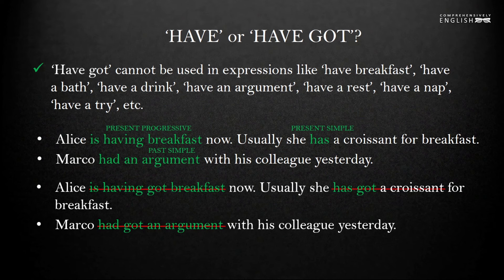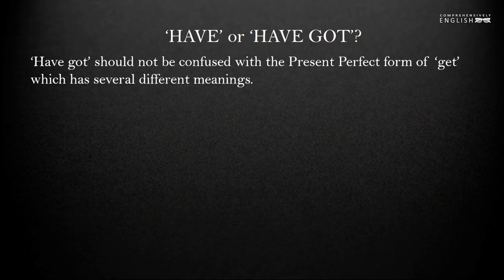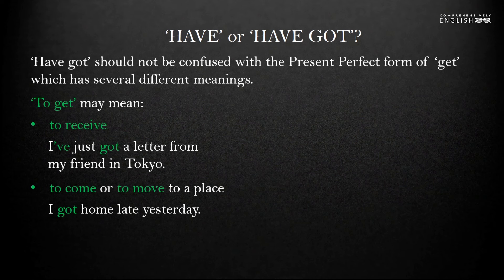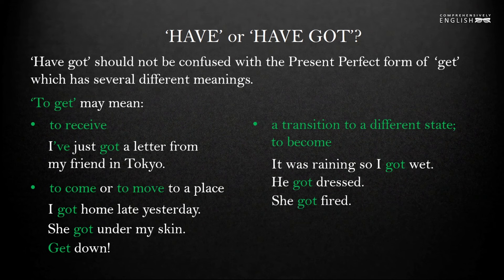Choosing between have and have got, we should not forget about the present perfect tense of the verb to get. Though have got originated from the present perfect, it should not be confused with the present perfect form of get, which has several different meanings. Get means to receive, as in 'I have got a letter from my friend in Tokyo'; to come to a place, as in 'I got home late yesterday'; and it also expresses a transition from one state to another, like 'it was raining so I got wet,' 'he got dressed,' or 'she got fired.'